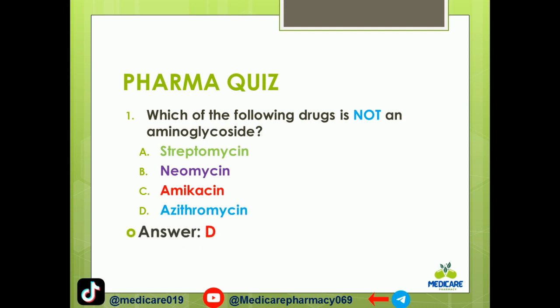The answer is D. Azithromycin. Azithromycin is not a group of aminoglycosides — Azithromycin is a group of macrolides.